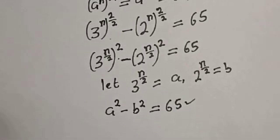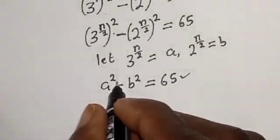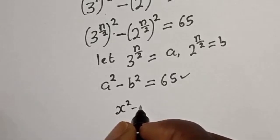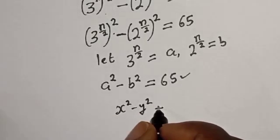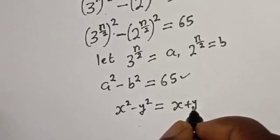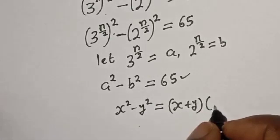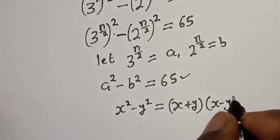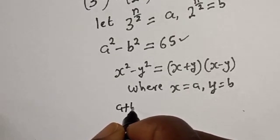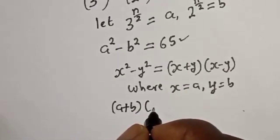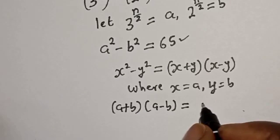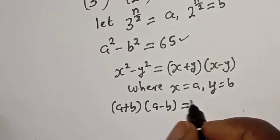This is a difference of two squares. Take note of the rule that S squared minus Y squared equals (S plus Y) multiplied by (S minus Y). So A squared minus B squared becomes (A plus B) multiplied by (A minus B) is equal to 65.